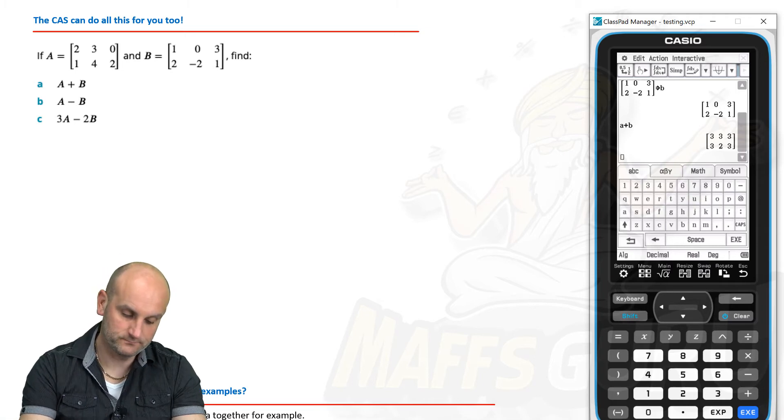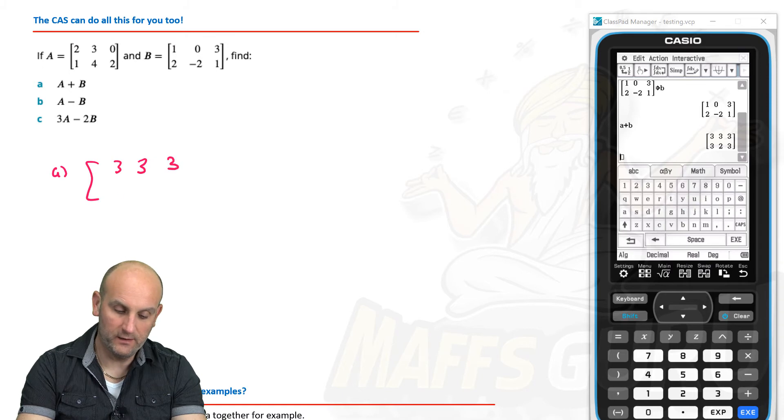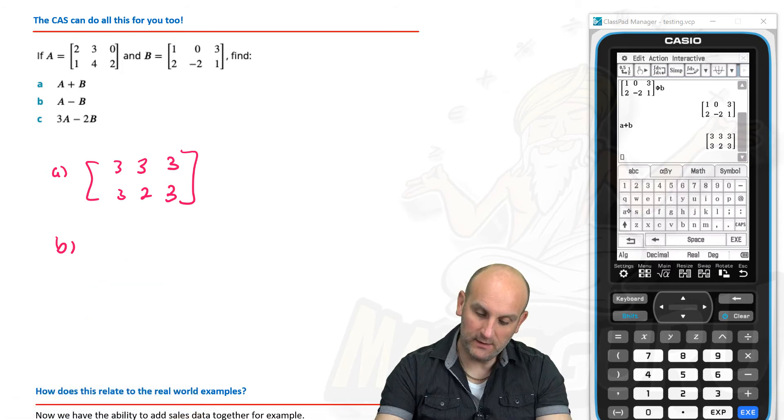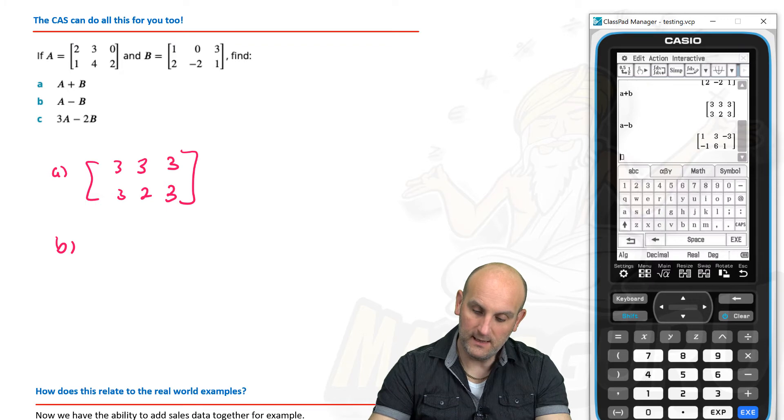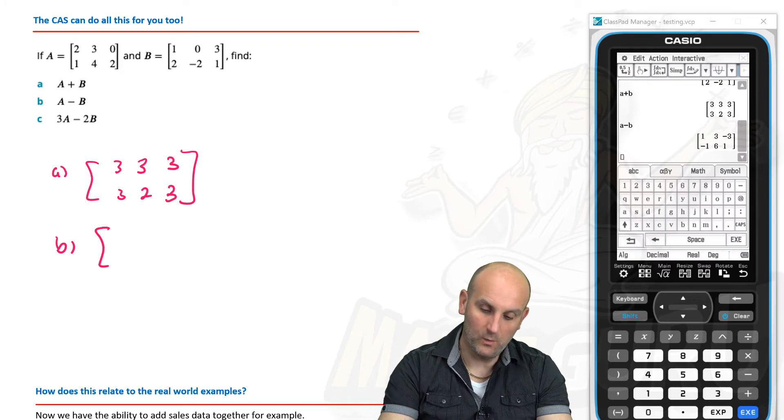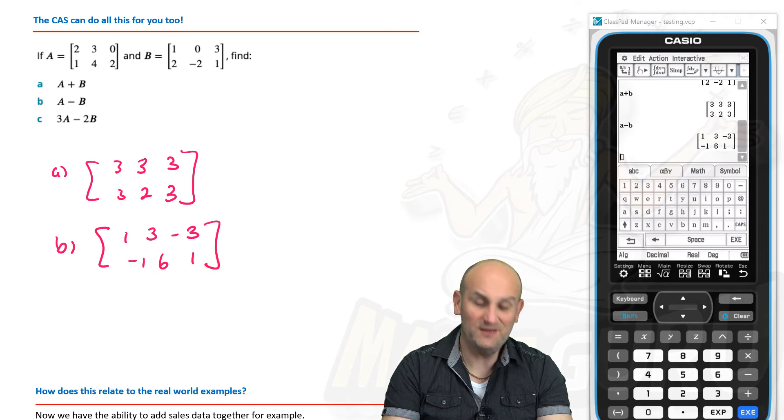Hit enter and out comes the value. So, for A plus B, the answer is 3, 3, 3, 3, 2 and 3. I could check that by hand, but I'm not going to. Next one is A minus B. So, there's A minus B. Enter. And that's going to give me 1, 3, minus 3, minus 1, 6 and 1. See how easy this is. Brilliant to put it in the memory.